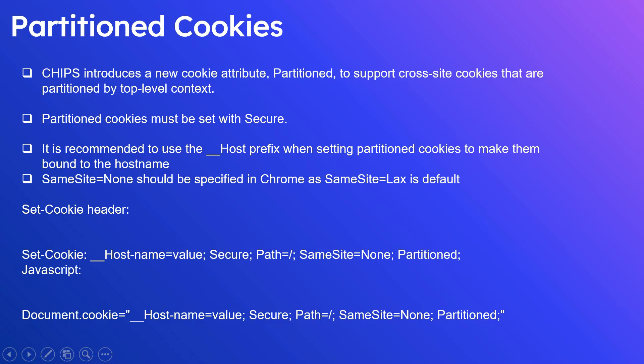CHIPS introduces a new cookie attribute called 'partitioned' to support cross-site cookies that are partitioned by top-level context. Partitioned cookies must be set with the 'Secure' attribute. It is also recommended to use the double-underscore host prefix to bind the cookie to the hostname. The 'SameSite' attribute value should be 'None' — the default in Chrome is 'Lax', but Firefox and Safari use 'None' as the default.